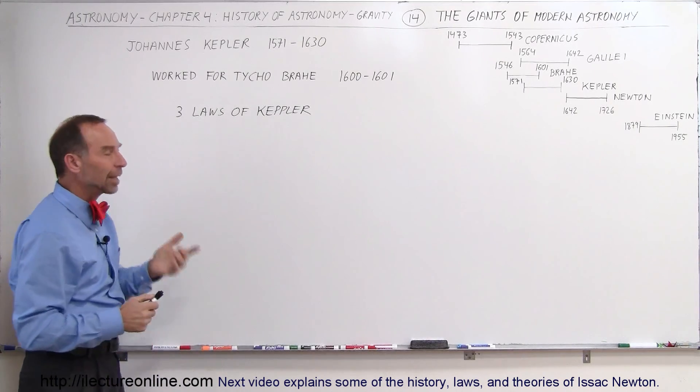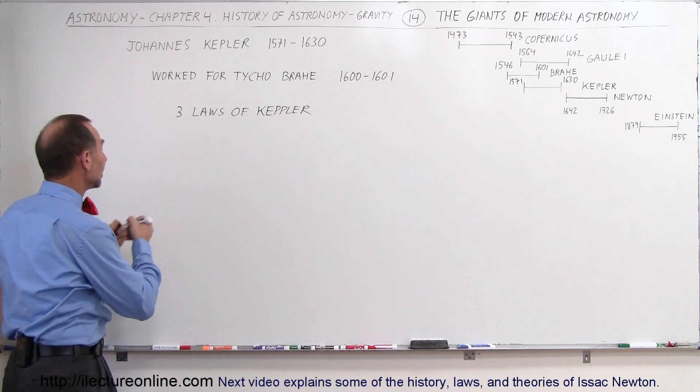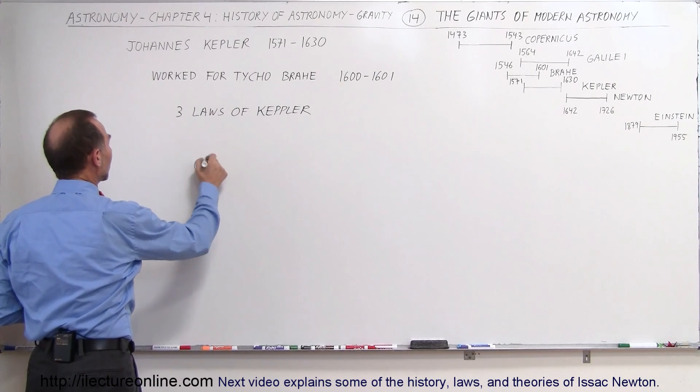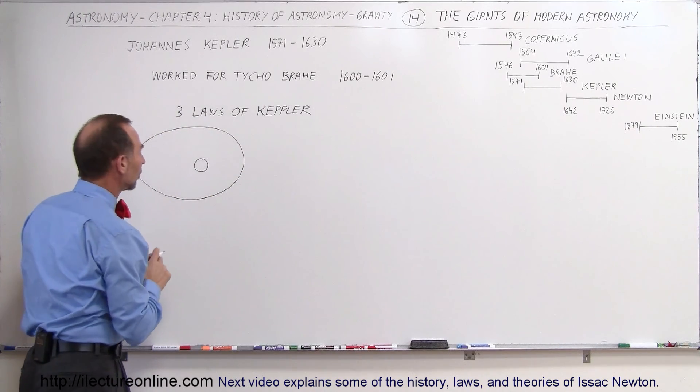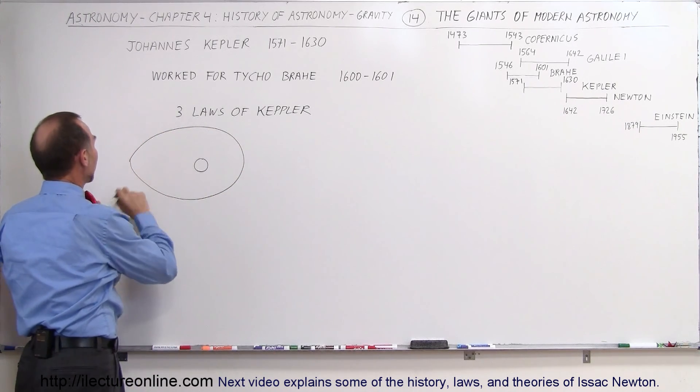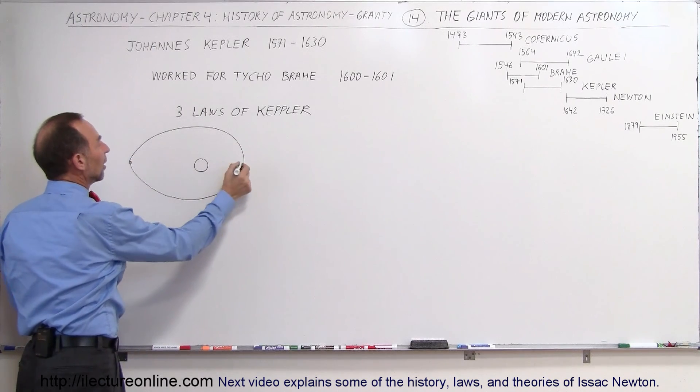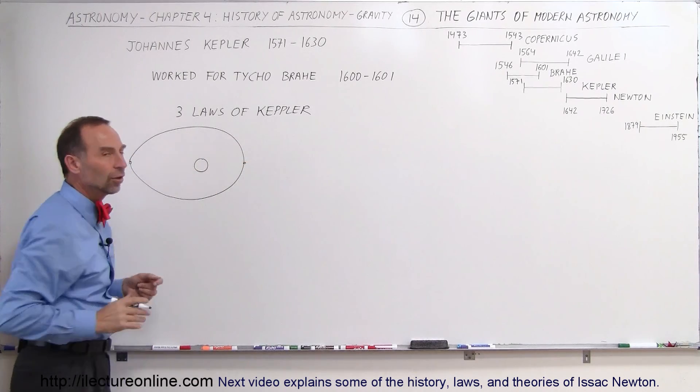Here were the three laws that Kepler came up with. The first law was realizing that if the Sun was over here, that the orbits of the planets were elliptical rather than circular. So that sometimes the planet would be much farther away from the Sun and sometimes the planet would be much closer to the Sun.